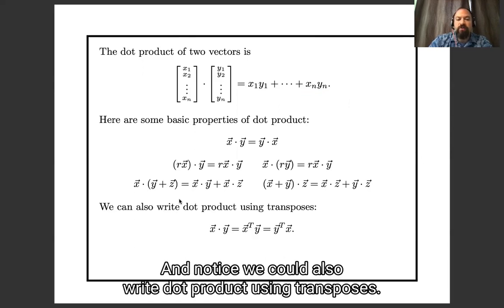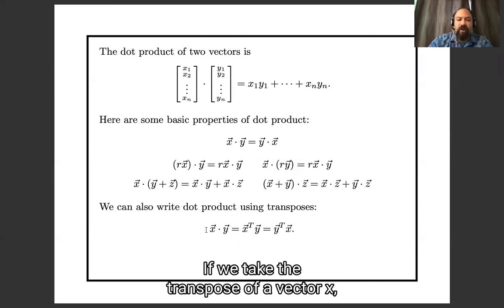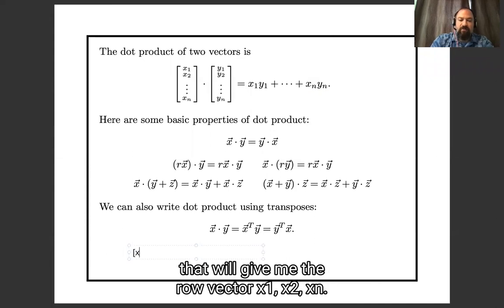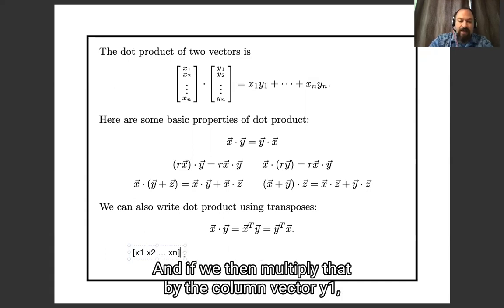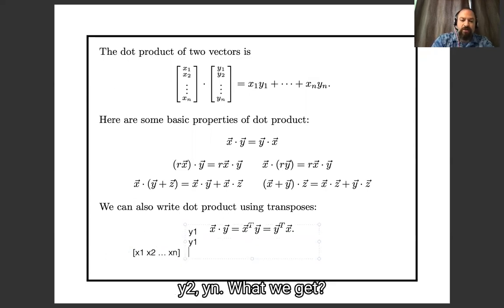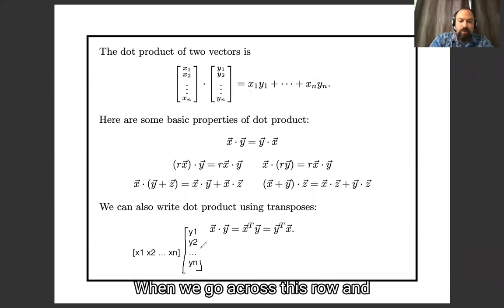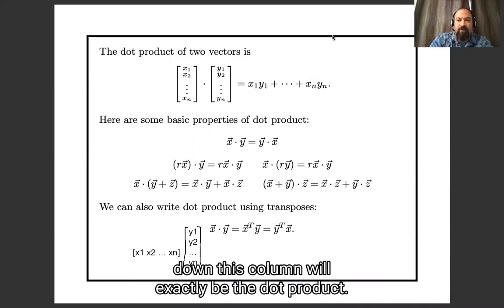And notice we could also write dot product using transposes. If we take the transpose of vector x, that will give me the row vector x1, x2, xn, and if we then multiply that by the column vector y1, y2, yn, what we get when we go across this row and down this column will exactly be the dot product.